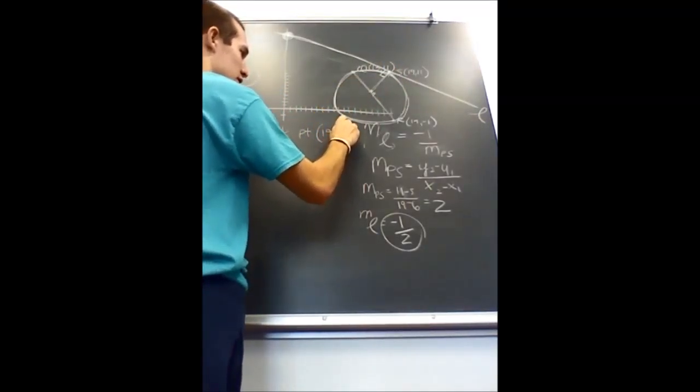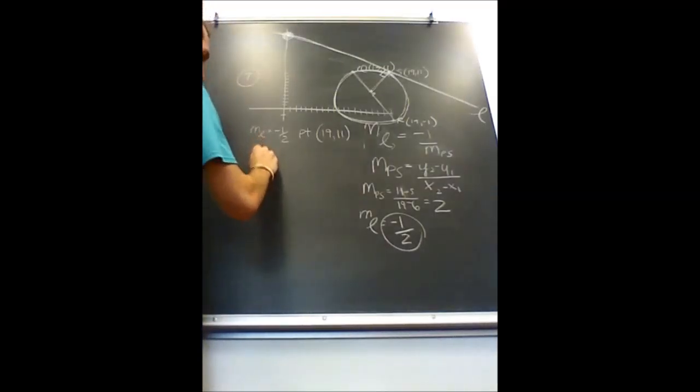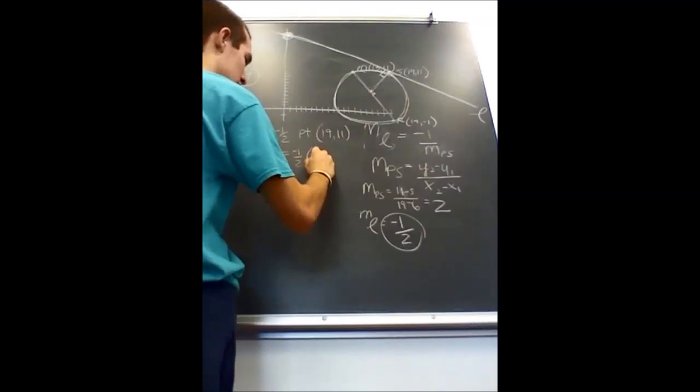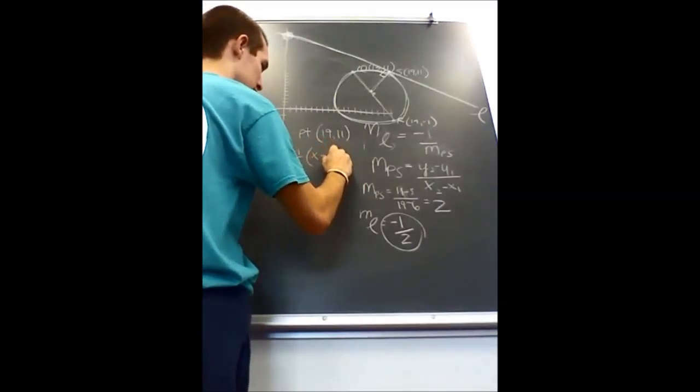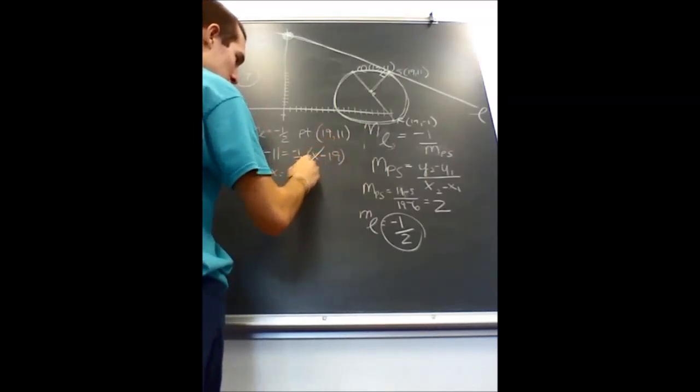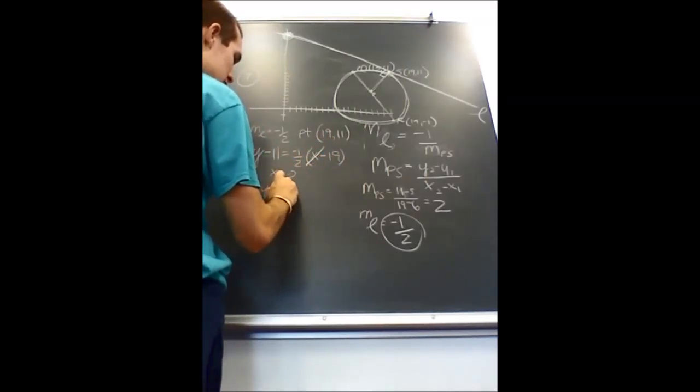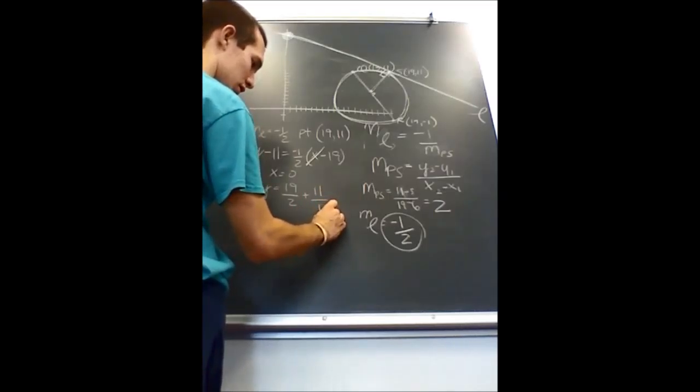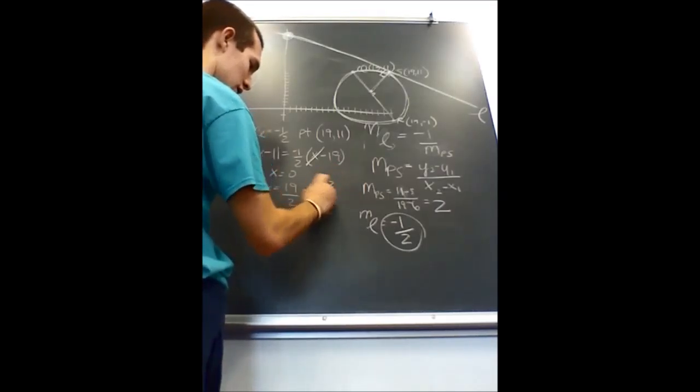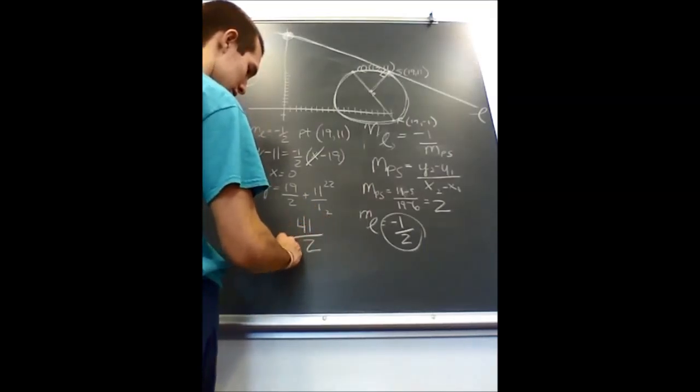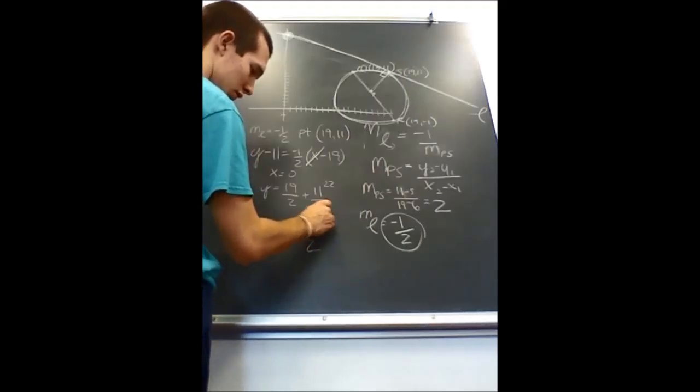then we can make an equation for the line: Y - 11 = -1/2(X - 19). We want to find when X is 0, so that means Y = 19/2 + 11/1. You need to get a common denominator so you can add, and you get the y-intercept equal to 41/2.